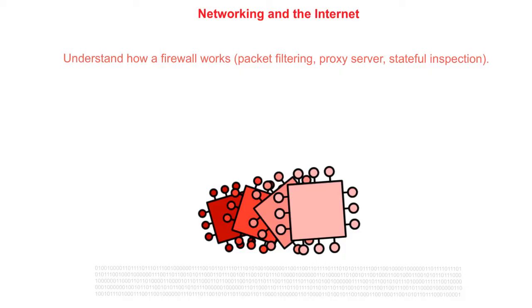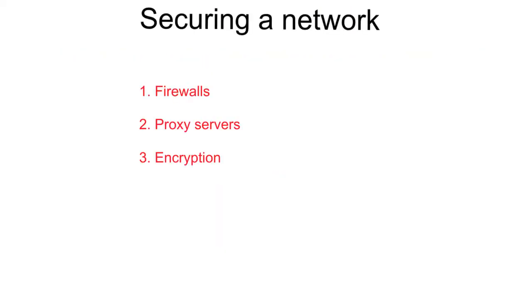If security measures are not put in place there would be nothing to stop unauthorised access to data, which could then be copied, altered or even deleted. We will take a look now at three methods of helping to secure sensitive data on networks: the use of firewalls, proxies and encryption.